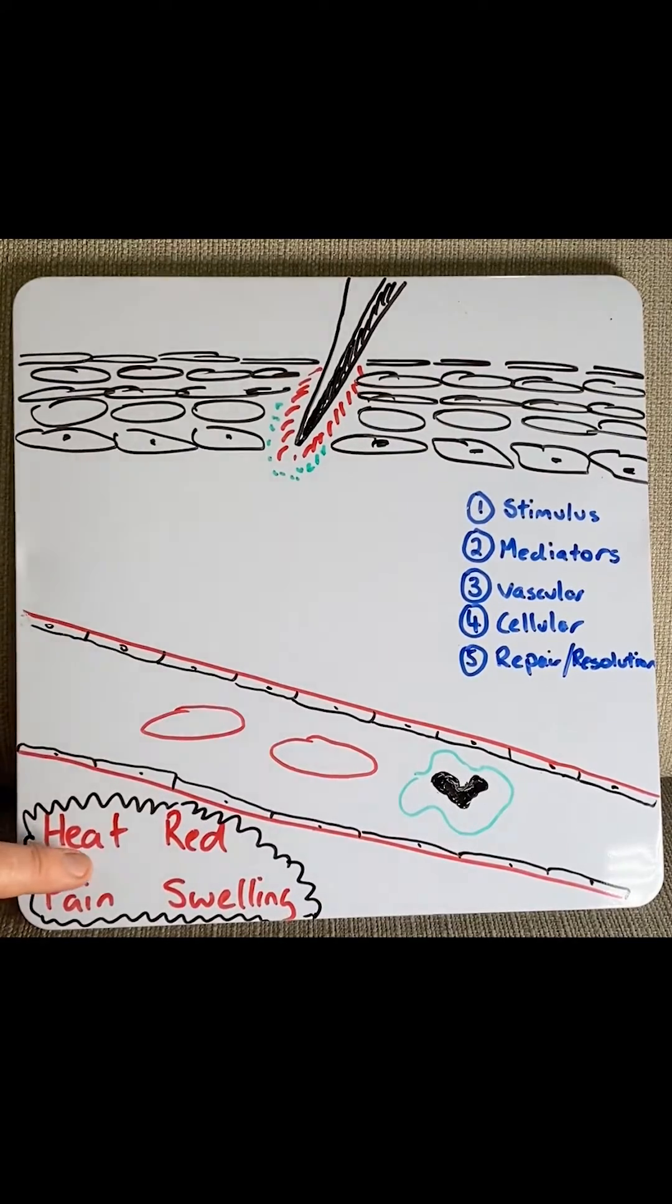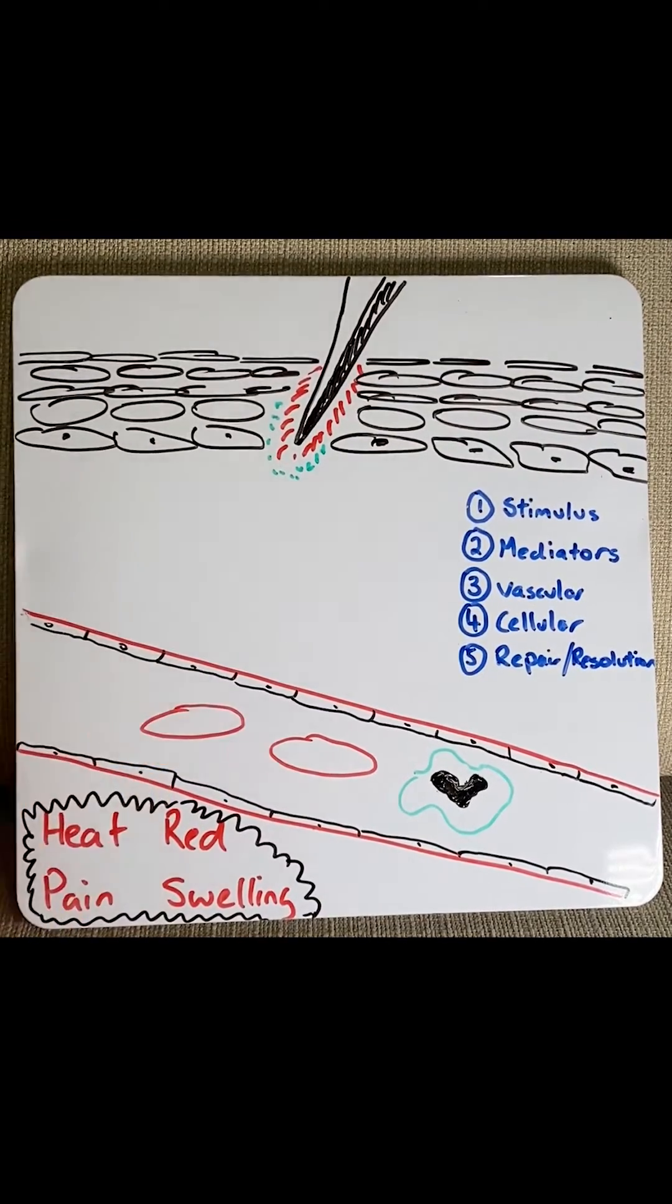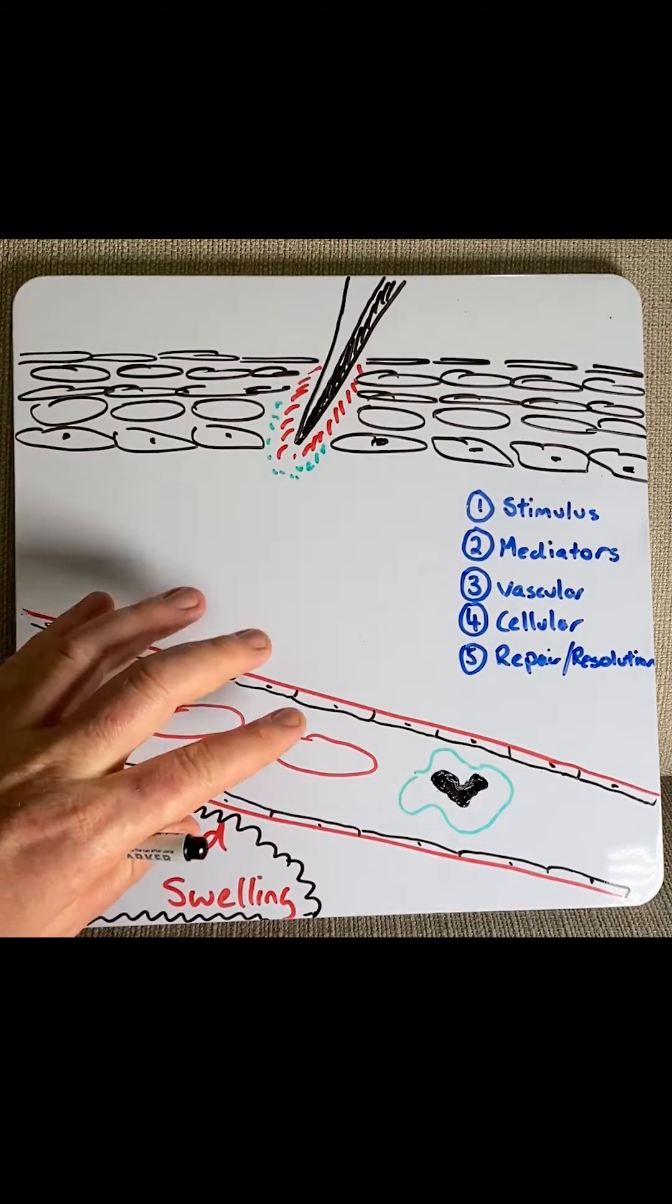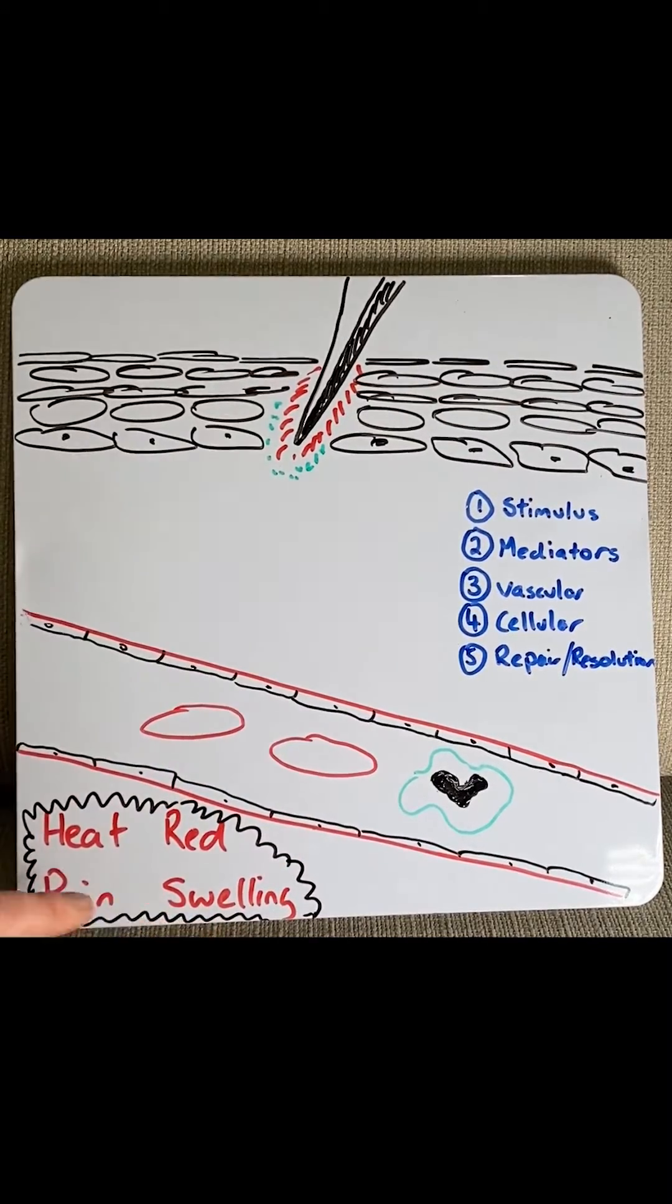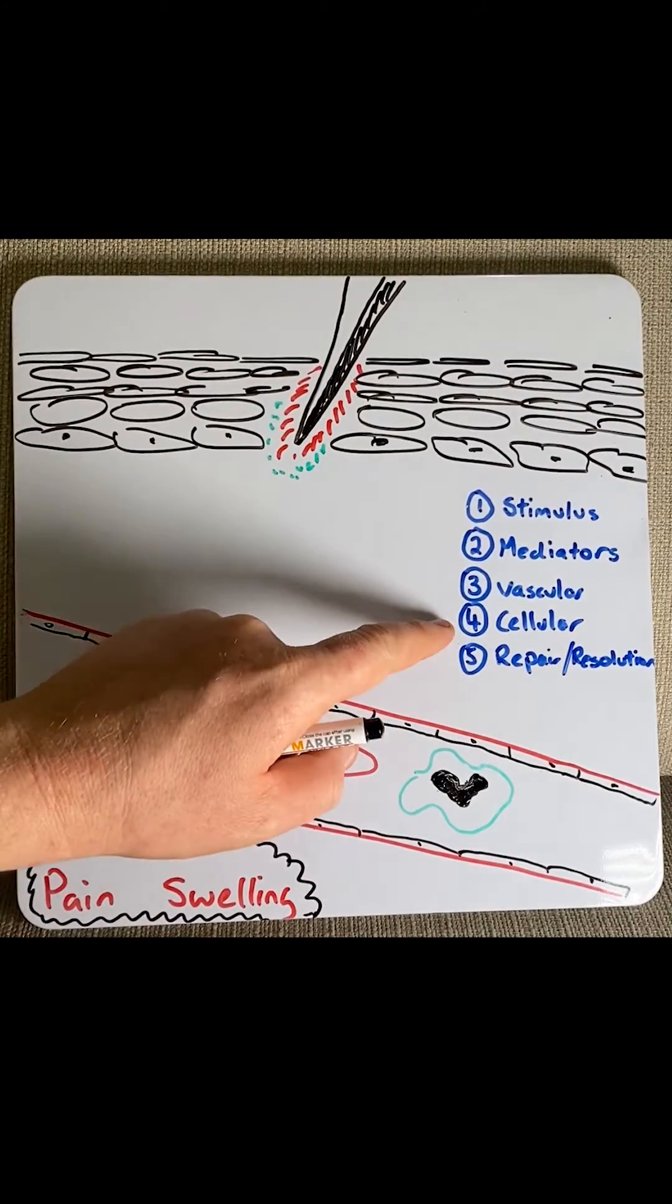This leads to heat and redness by increased blood flow to the area, and as the blood vessels become leaky, more fluid goes out into the tissue which causes the swelling and pain. Then we move to the cellular phase.